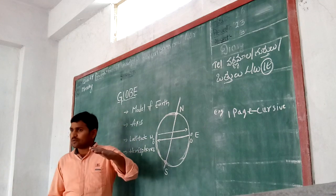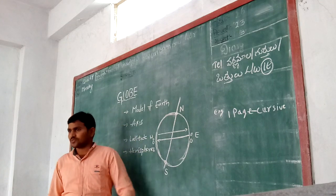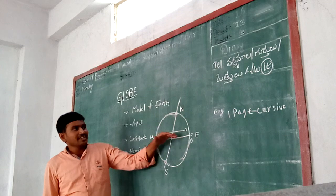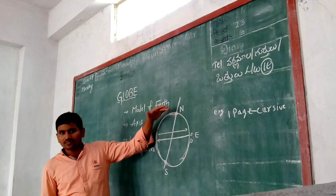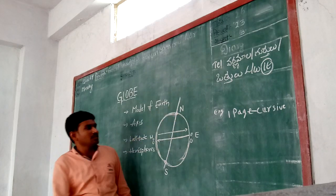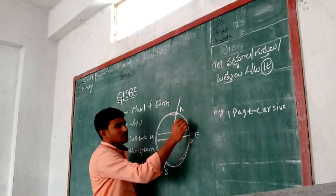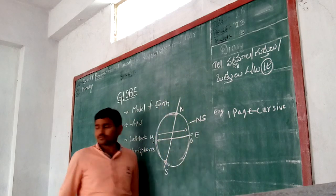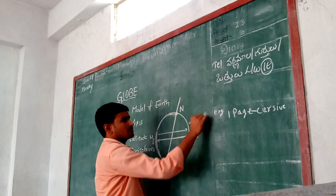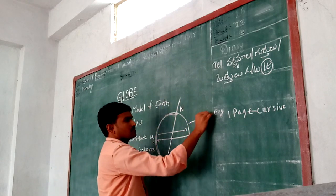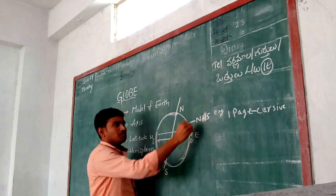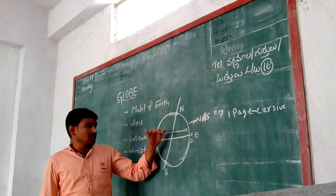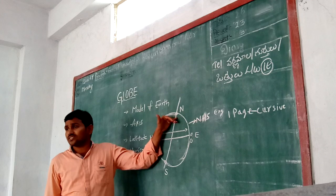The equator divides the earth into two hemispheres. The north part of the equator is called the Northern Hemisphere. The south part of the equator is called the Southern Hemisphere.